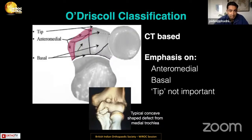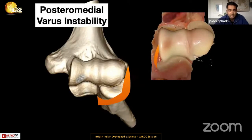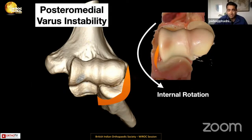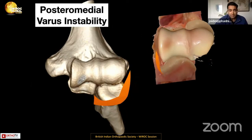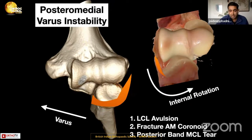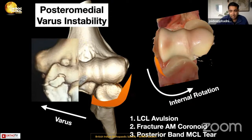We characteristically get a concave defect in the medial trochlea, which can extend into the sublime tubercle or tip region, but the anterior medial part is most concerning. Anterior medial fractures are associated with a fairly malignant type of instability called posteromedial varus instability. With an internal rotation force and varus force, we get varus and internal rotation subluxation with tearing of the lateral collateral ligament and a classic anterior medial coronoid fracture, concave shaped from the trochlea driving into the coronoid. The posterior band of the MCL is the hidden injury.